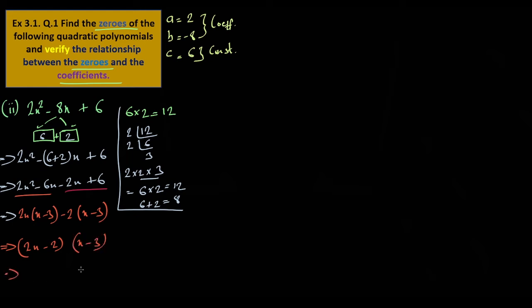So the zeros: x is equal to 3, and x is equal to minus 2 by 2. Simplify minus 2 divided by 2 — that gives 1. So x equals 1.